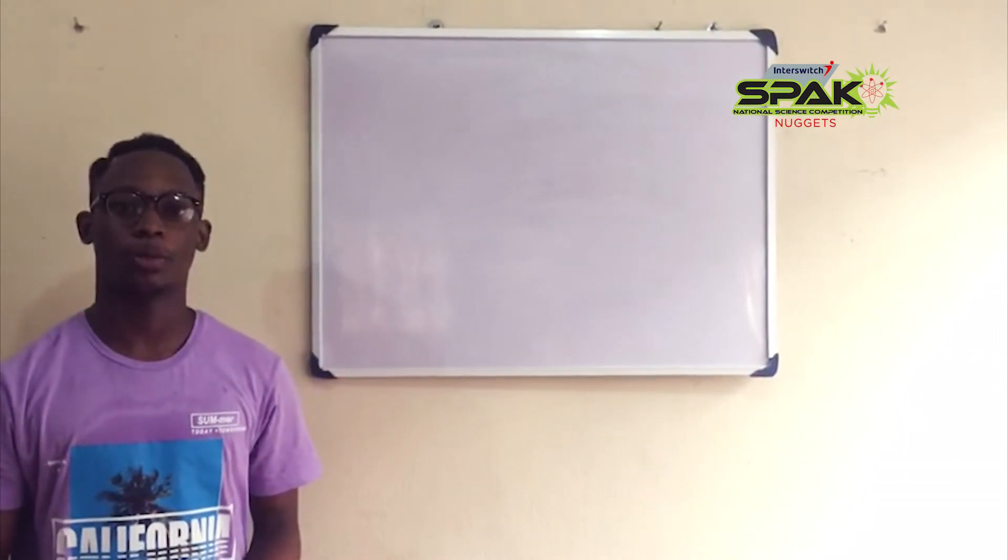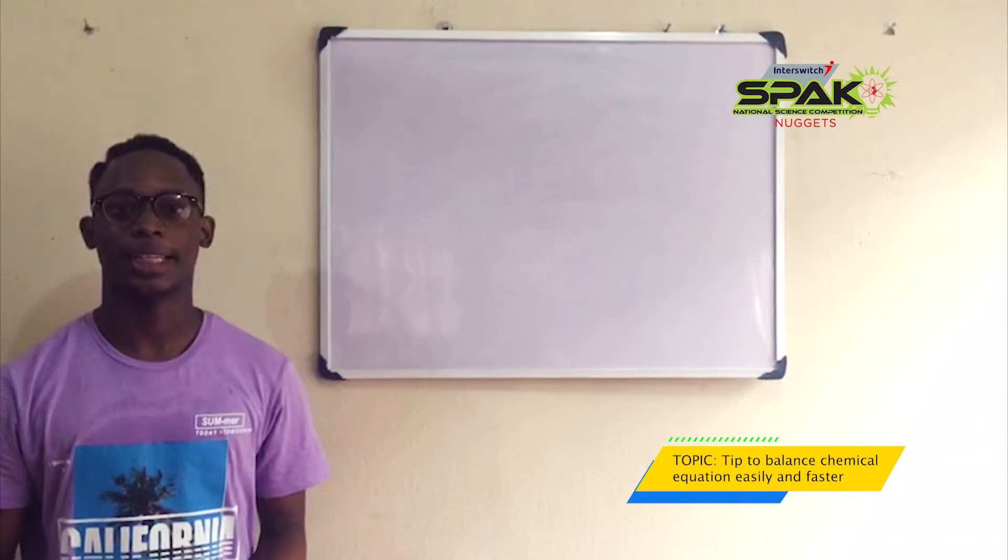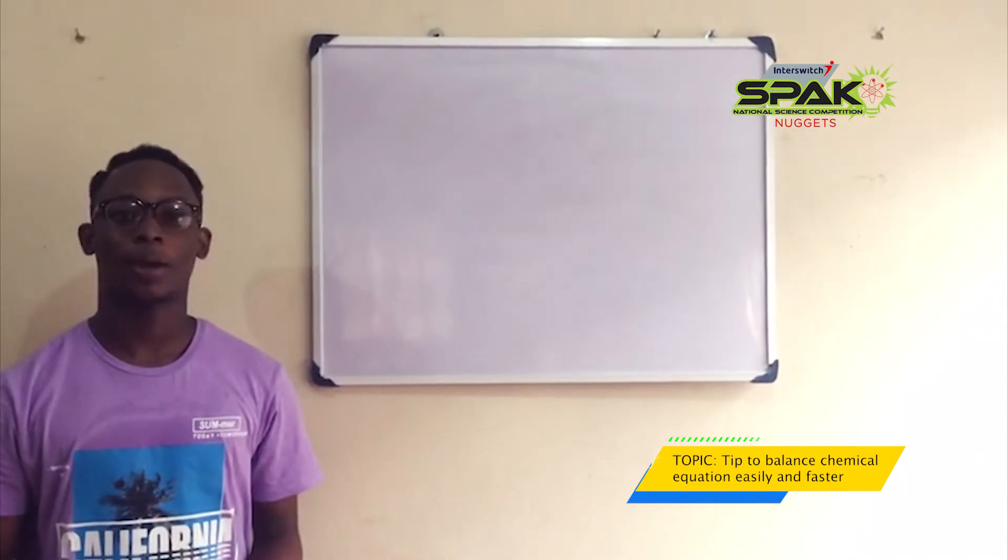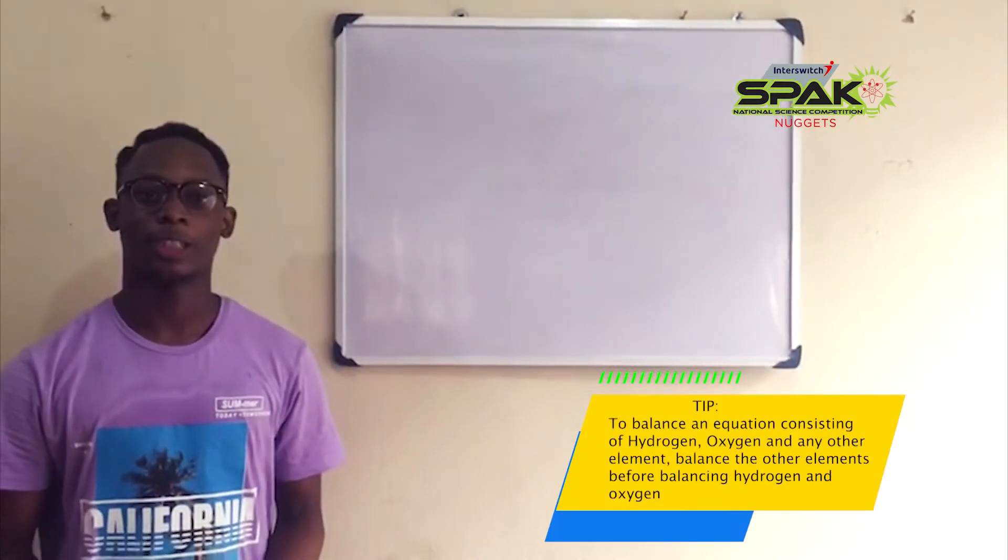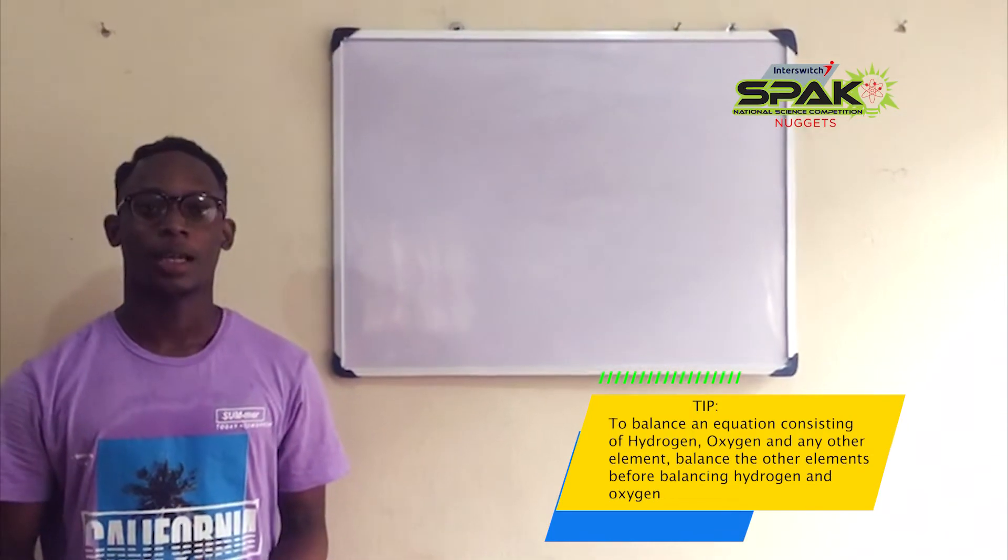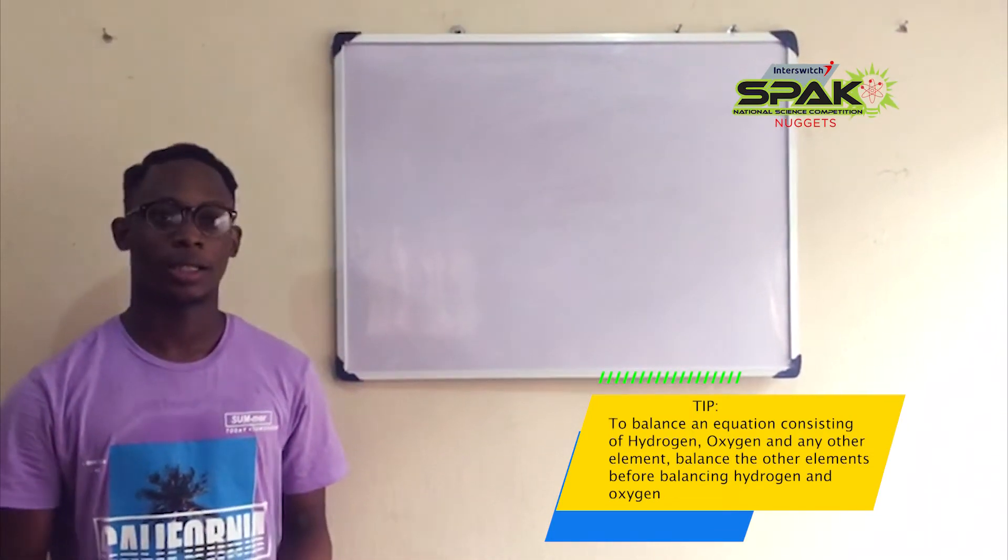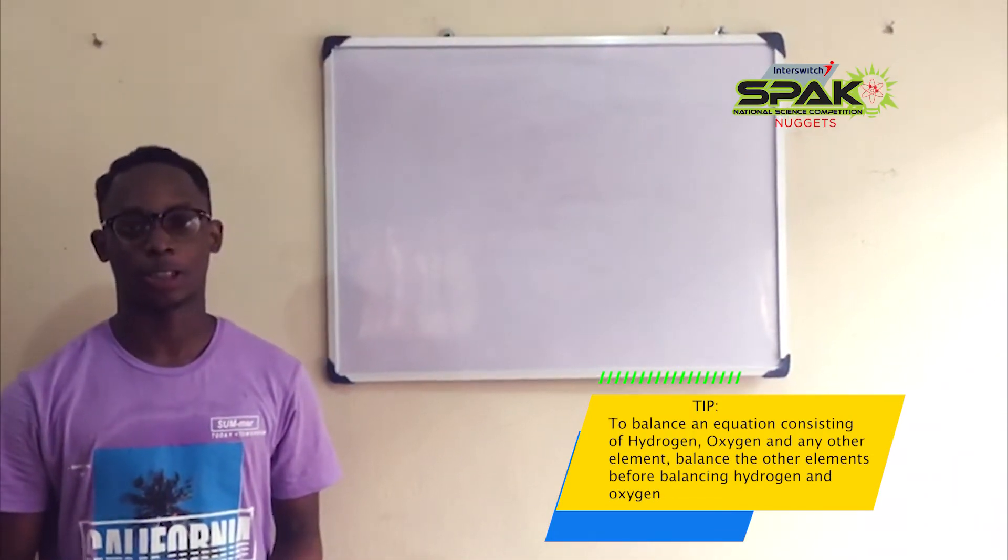Today, I will give you a tip that may help you balance chemical equations more easily and faster. The tip is, when balancing an equation that consists of hydrogen, oxygen and any other element, balance the other element first, then balance hydrogen just before oxygen.